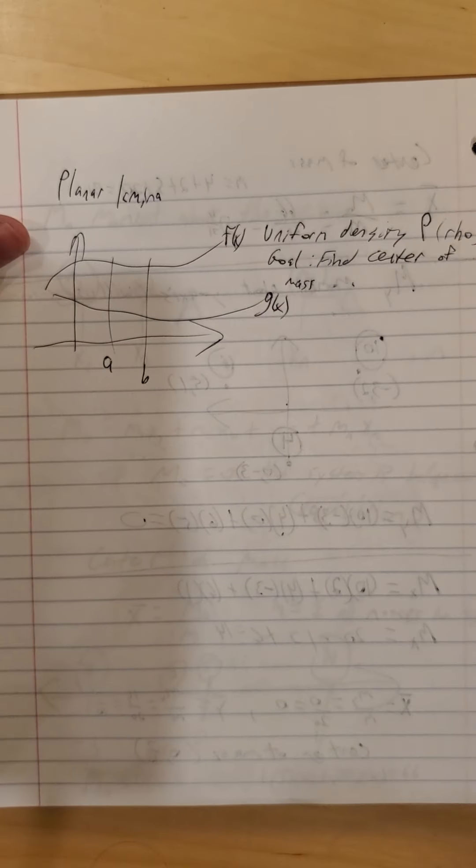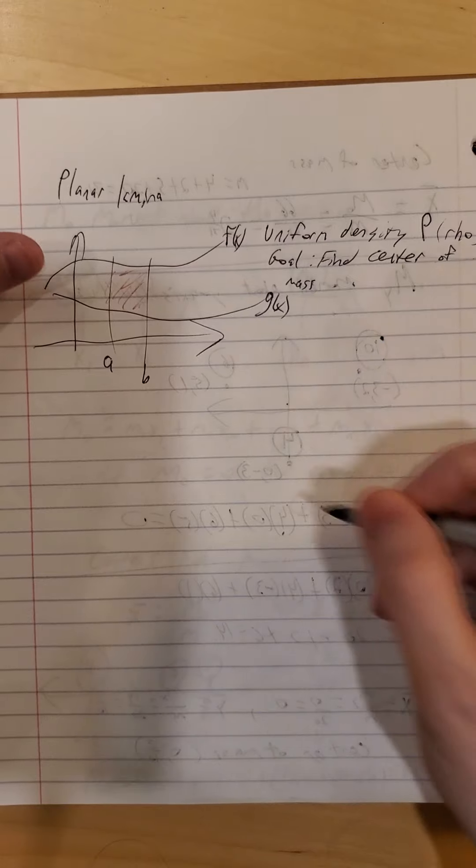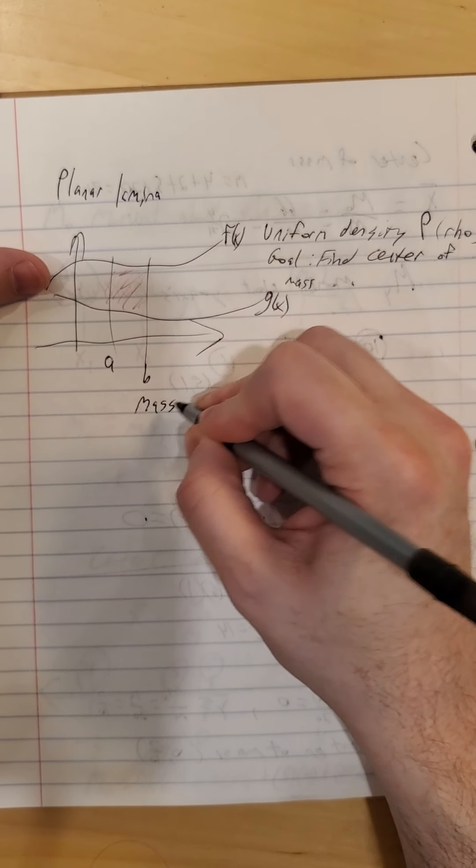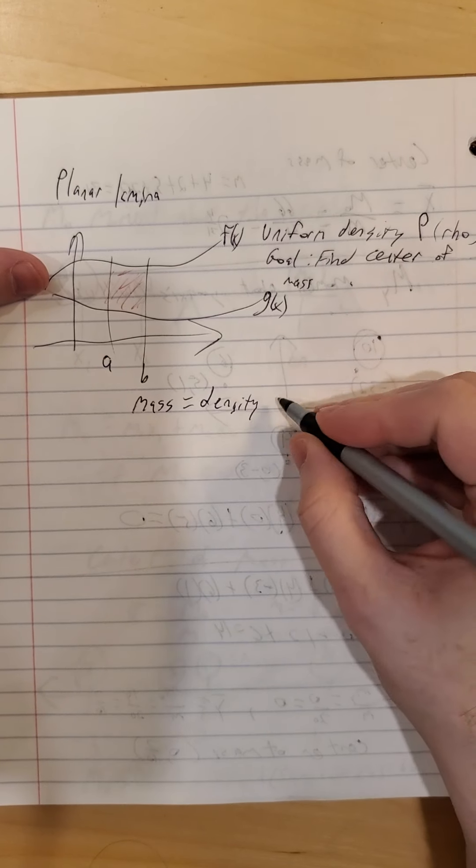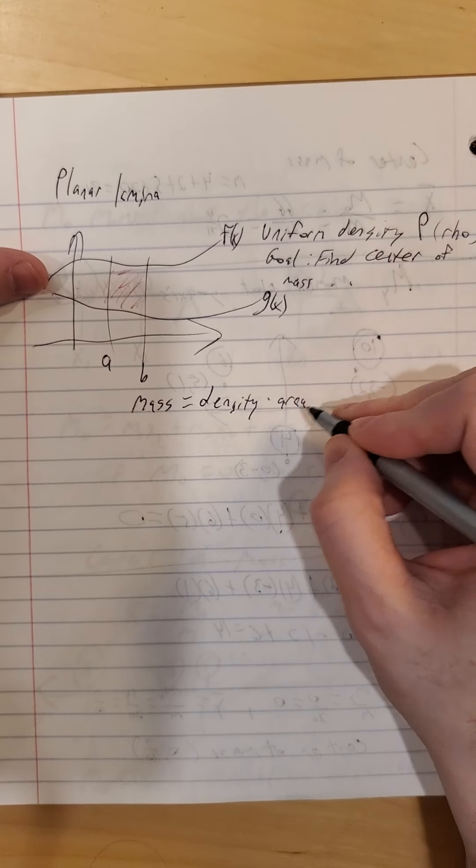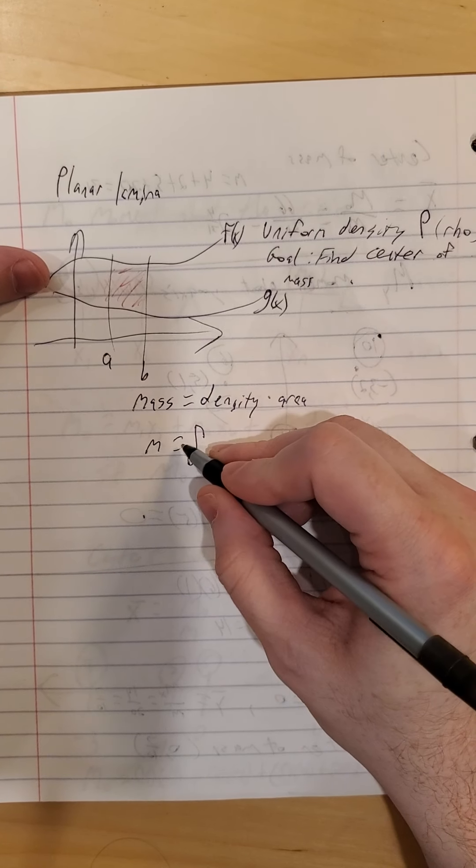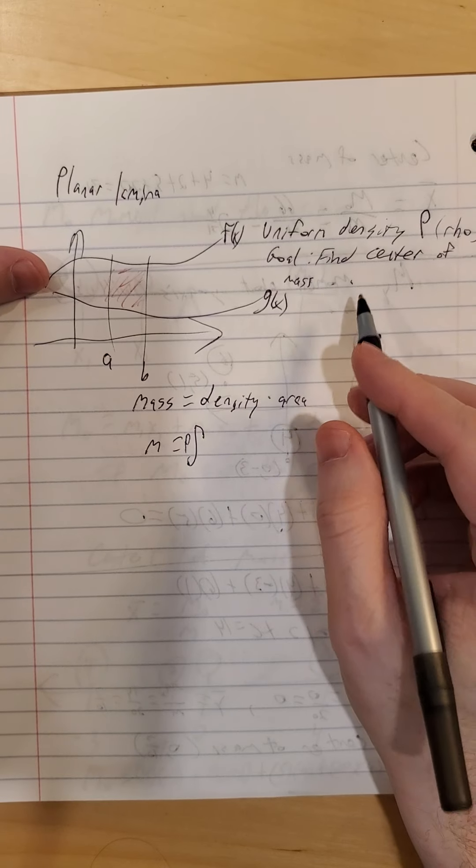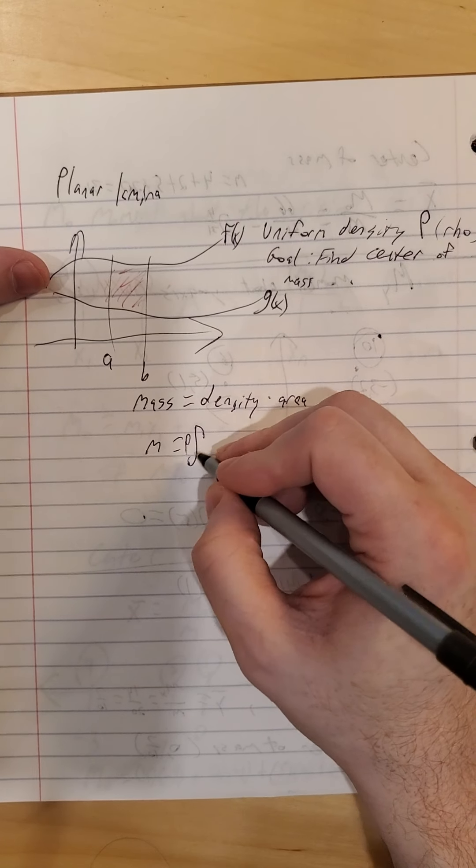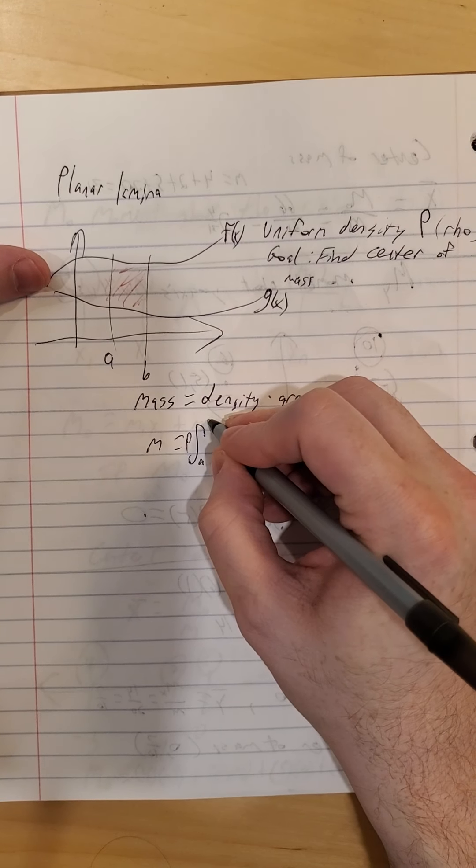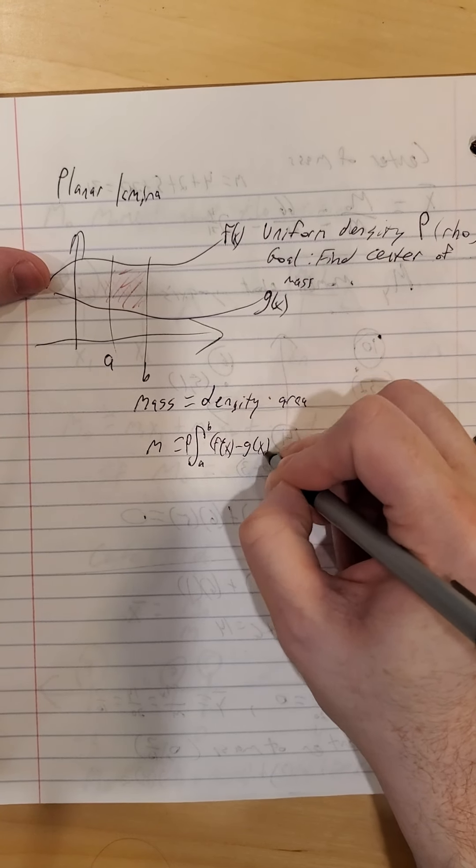And we're looking at an area from axis a to axis b. So for starters, our mass of this area is density times area. So our density is rho. We're going to assume uniform density, so not a variable, so we can park it in front of the integral. And area will just be integral from a to b of, in this case, f of x minus g of x times dx.